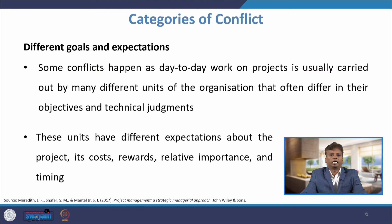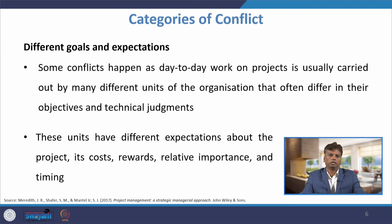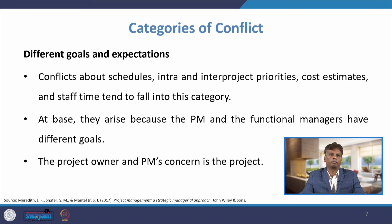The first category in detail is different goals and expectations. Some conflicts happen because day-to-day work on projects is usually carried out by many different units of the organization that often differ in their objectives and technical judgments. These units have different expectations about the project — its cost, rewards, relative importance, and timings. Conflicts about schedules, intra and inter-project priorities, cost estimates, and staff time tend to fall into this category.